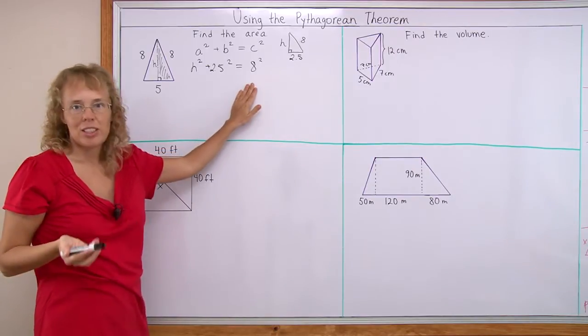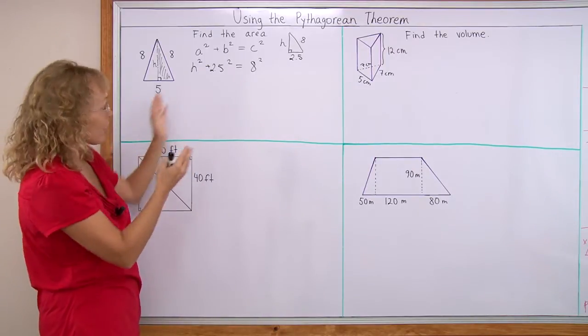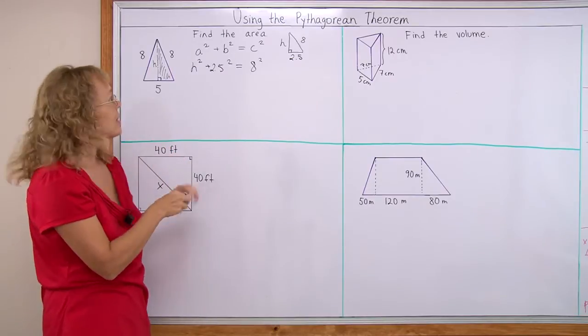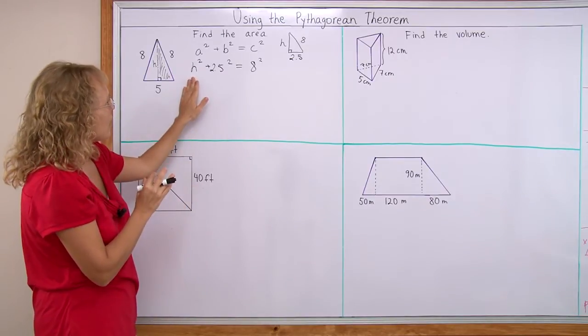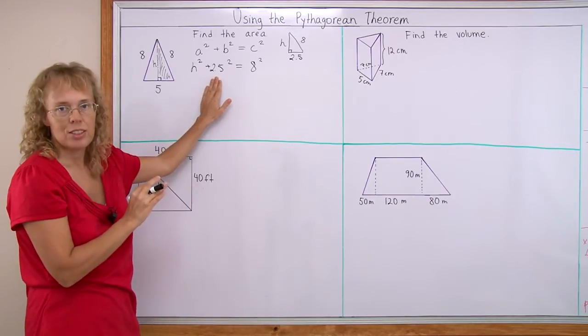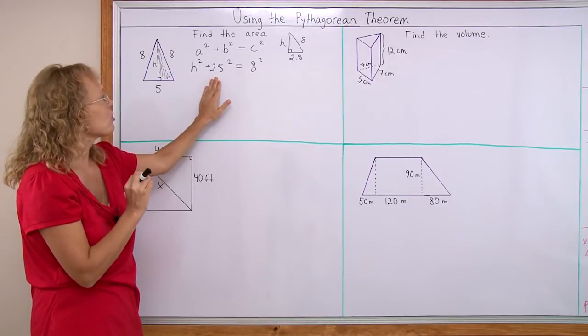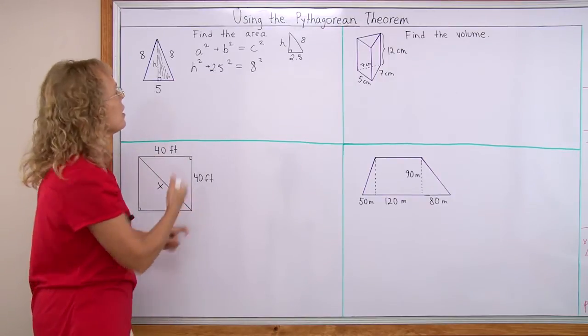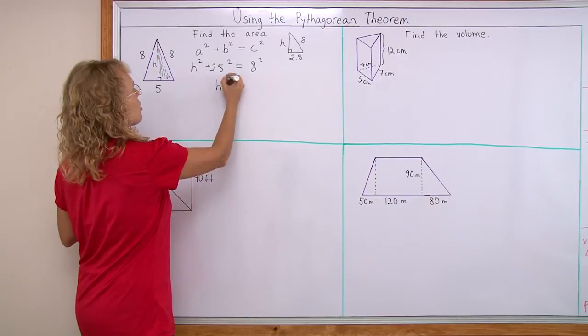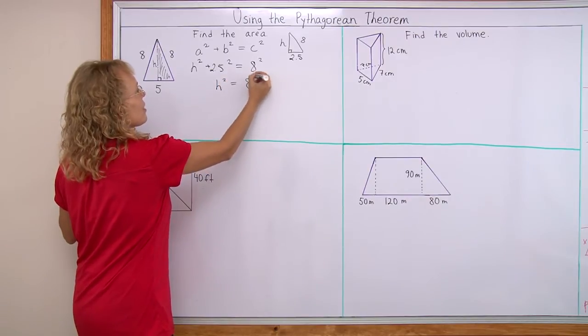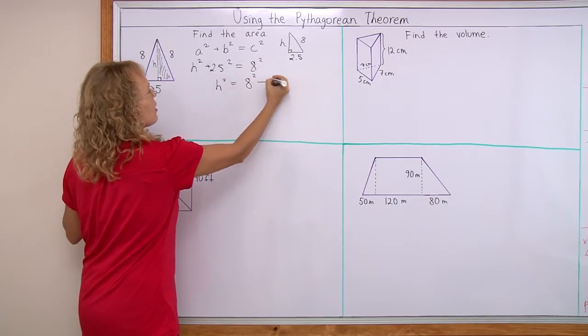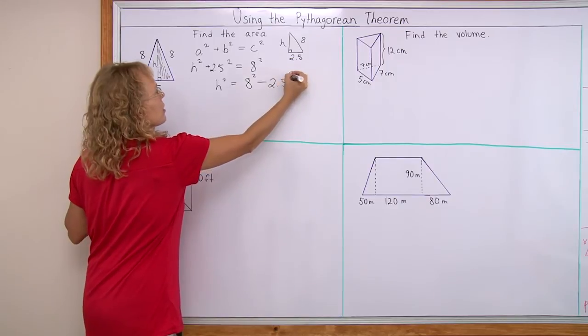And now we solve this equation. We first isolate h squared on one side. To do that we need to subtract this term, 2 and a half squared. We need to subtract that from both sides. So then we get h squared equals 8 squared here and then take away 2 and a half squared.